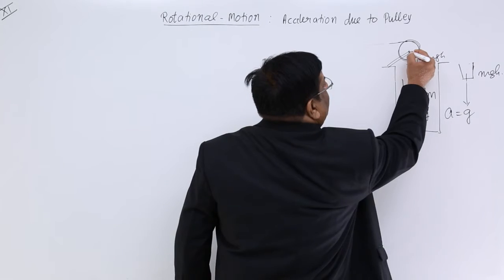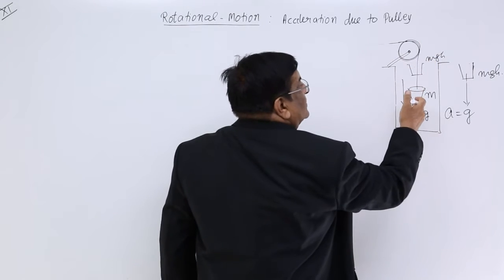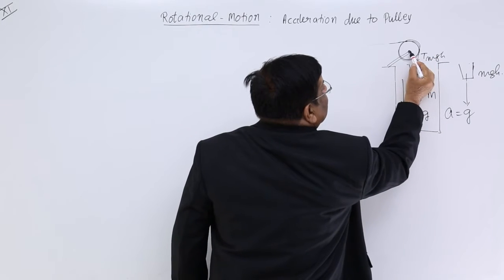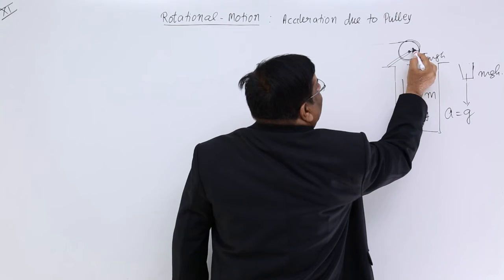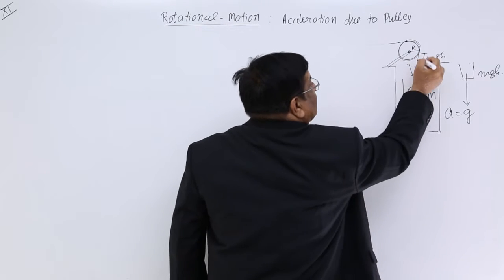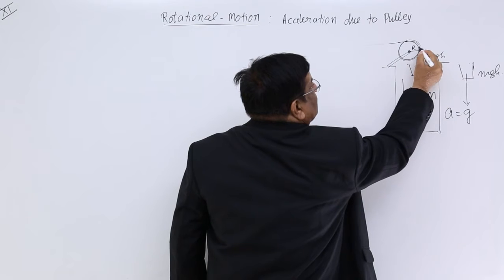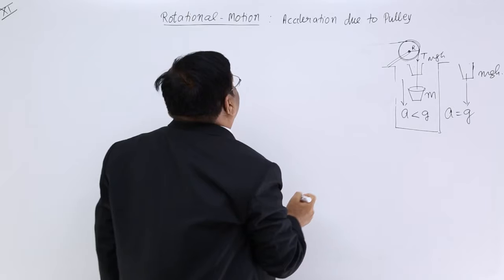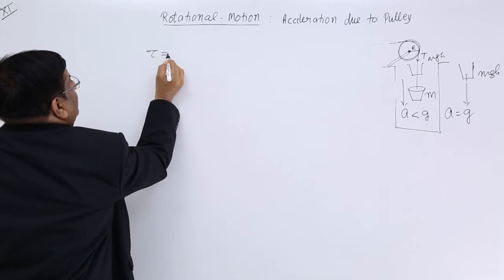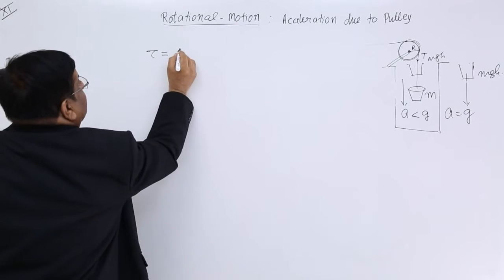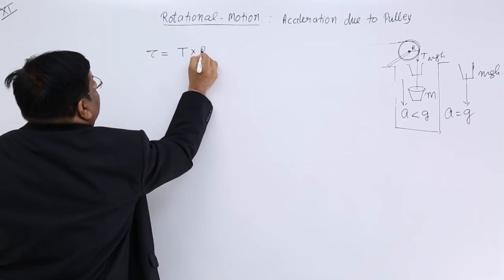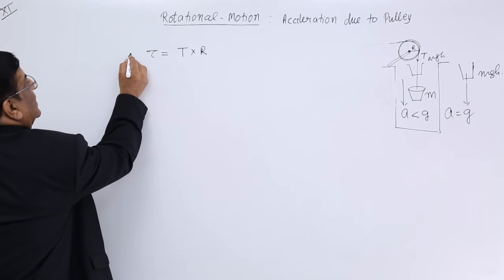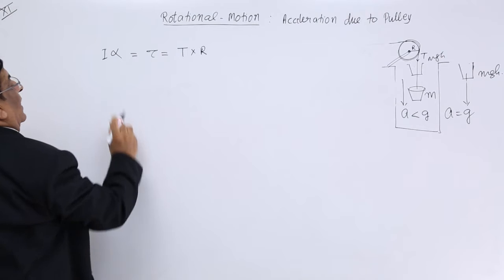The process is the same. This string has got certain tension. This has got a radius. Let us say this radius is equal to r. This is tension T. This is a force. So what is the torque on this pulley? Torque on the pulley is equal to force into radius, that is T into r, or r into T. Then we know that torque can also be calculated as I into alpha.